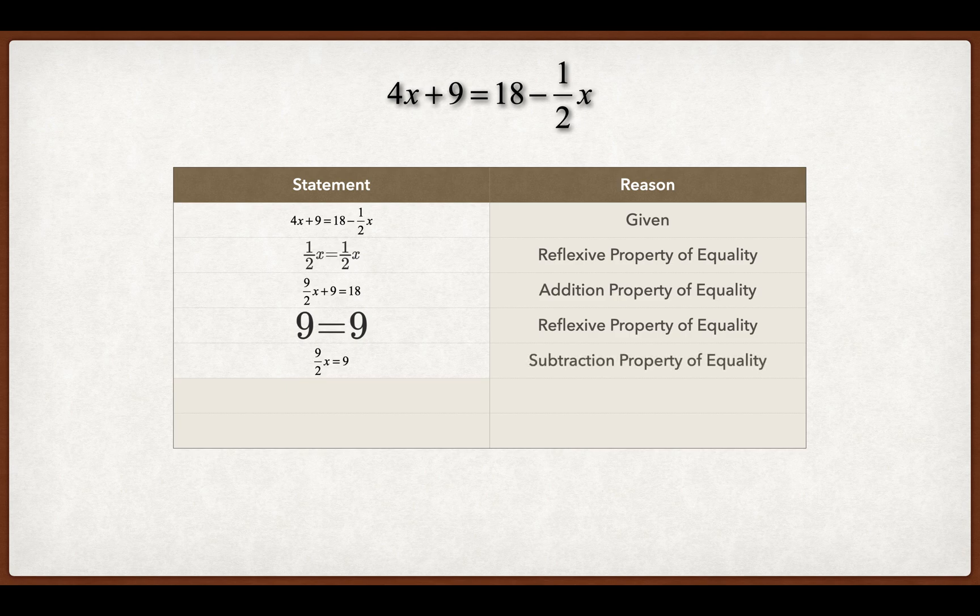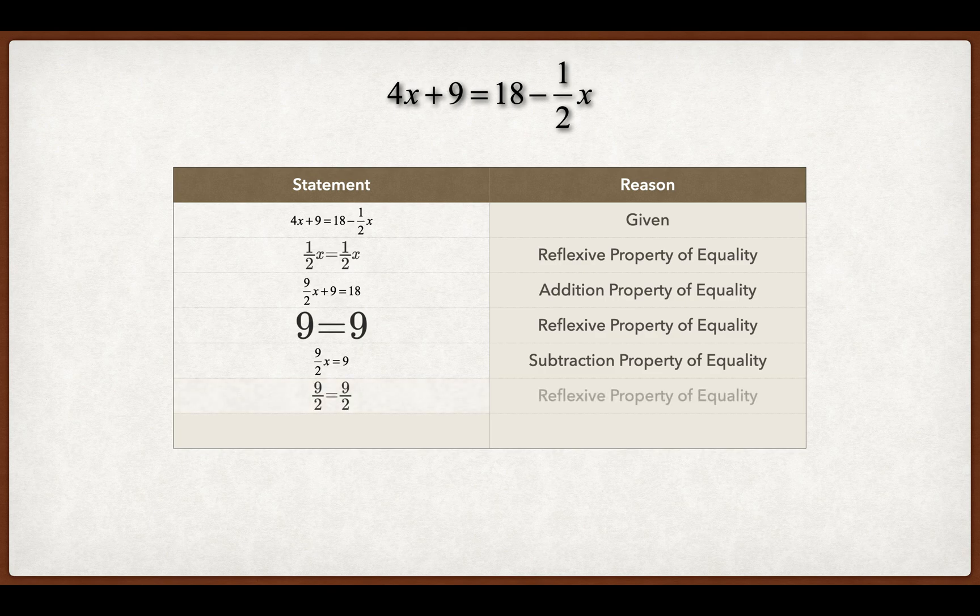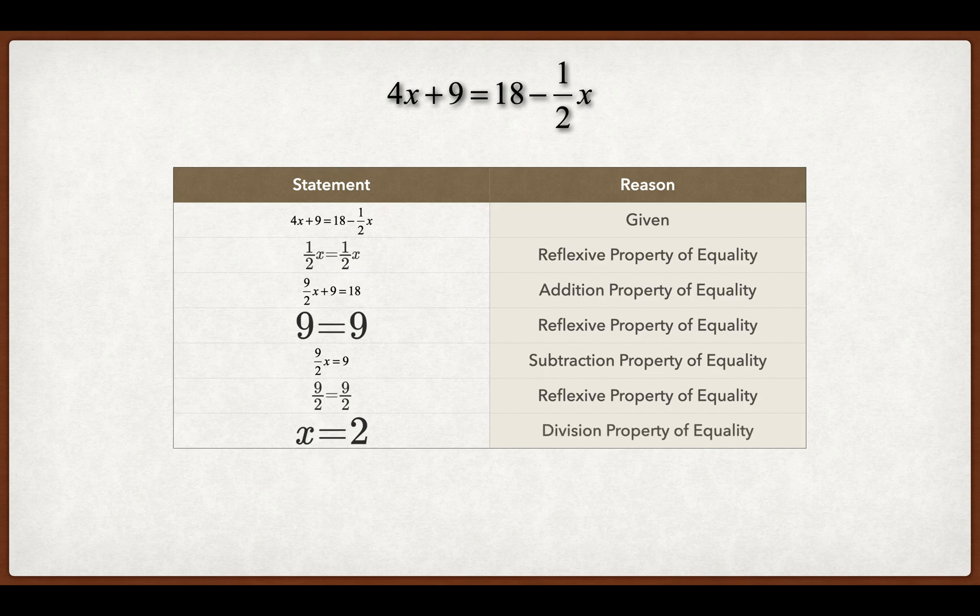And the last thing I would do is I would end up, because nine halves is being multiplied by X and I want X by itself, I divide by nine halves or multiply by its inverse. So nine halves equals nine halves. That's reflexive. And I would say I divided. So that's the division property of equality to get us to X equals two. And that's how I would solve a proof like this one.